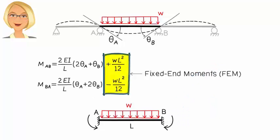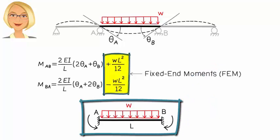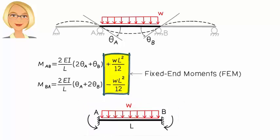That is, these are the support reactions for this beam. The moment reaction at A is counterclockwise WL squared over 12, and at B we have a clockwise moment of WL squared over 12.